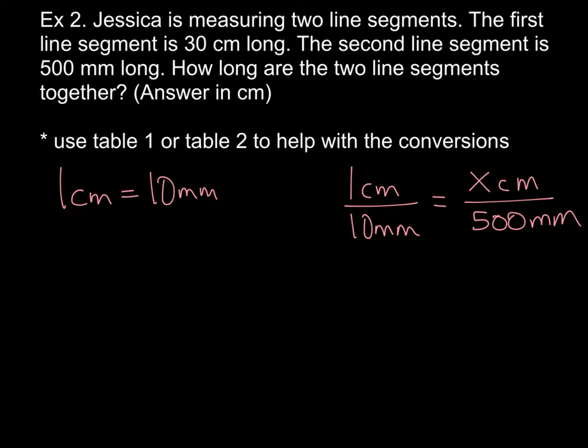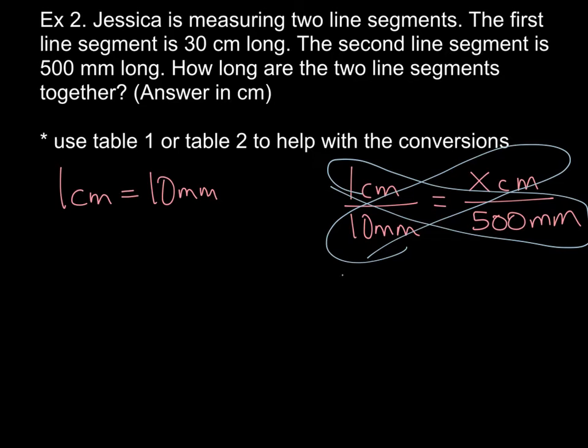All right. So again, I put the conversions over there. So 1 centimeter is equal to 10 millimeters. And then I did the proportion here so you can see the math behind it. 1 centimeter over 10 millimeters is equal to X centimeters, because we don't know how many, over 500 millimeters. So again, I'm going to go ahead and cross-multiply. And when I do that, I get 10X,